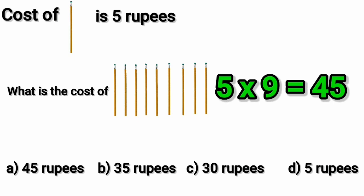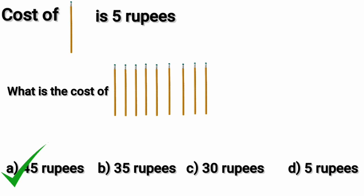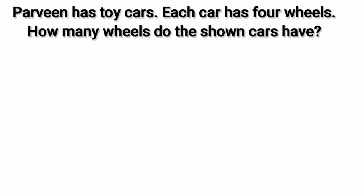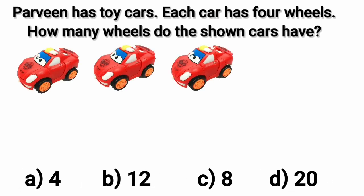Parveen has two cars. Each car has four wheels. How many wheels do the shown cars have? Kids, you can see the number of wheels of one car is four. One fours are four.